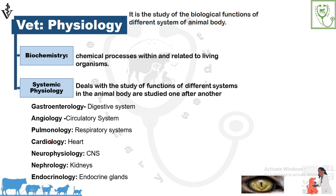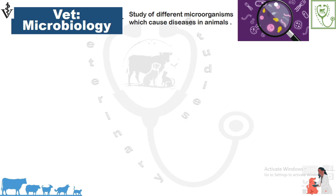Cardiology covers the physiology of the heart. Neurophysiology covers the physiology of the central nervous system. Nephrology covers the functions of the kidney or renal system. Endocrinology covers the functions of endocrine glands such as the thymus, pituitary gland, hypothalamus, testes, ovaries, etc.